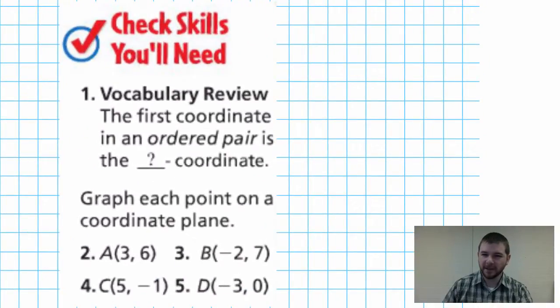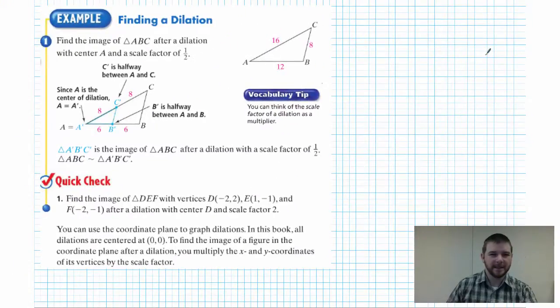Quick check of the skills you'll need. Number one: vocabulary review. The first coordinate in an ordered pair is the blank coordinate. Numbers two through five: graph each point on a coordinate plane.